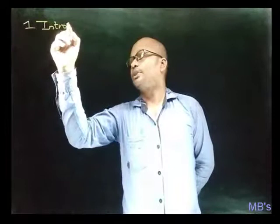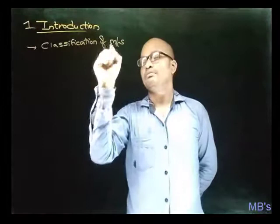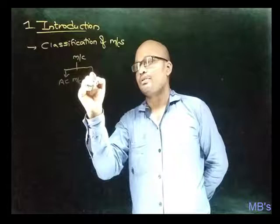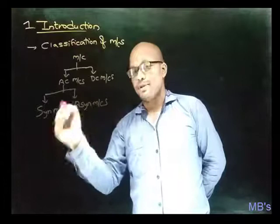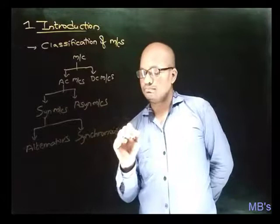Introduction. First, let us see the classification of electrical machines. Not going for a broad classification, but a simple one which leads to alternators. Electrical machines are classified as AC machines and DC machines. AC machines are further classified as synchronous machines and asynchronous machines, and synchronous machines include alternators and synchronous motors.